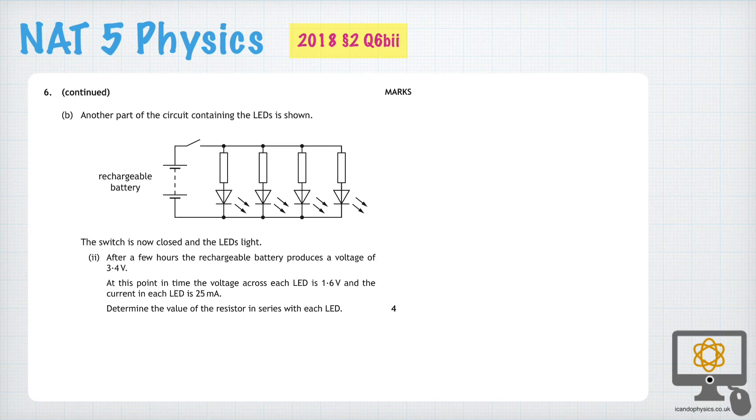We're now told in question 6B part 2 that after a few hours the voltage from the supply is 3.4 volts. And that's supplied to each section. So there's a section there, that'll get 3.4, this'll get 3.4 and so on. These will all get 3.4 volts across them.